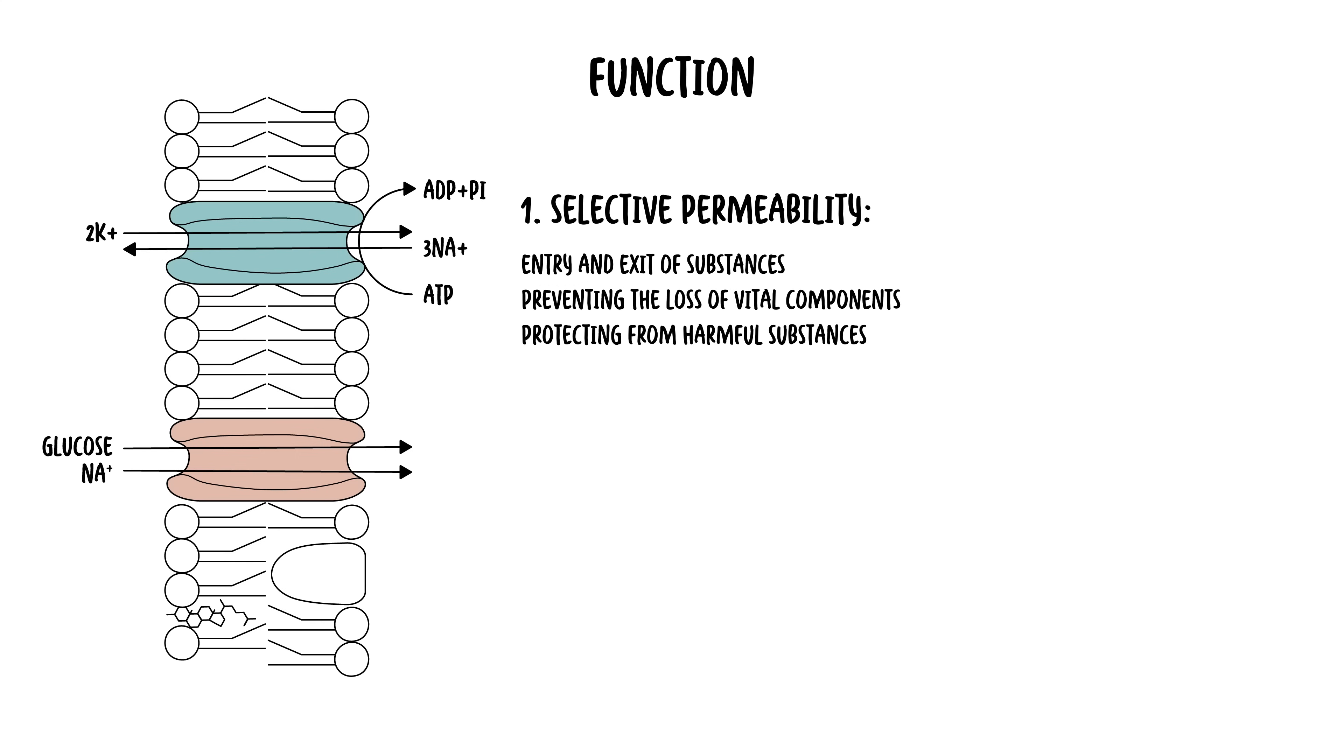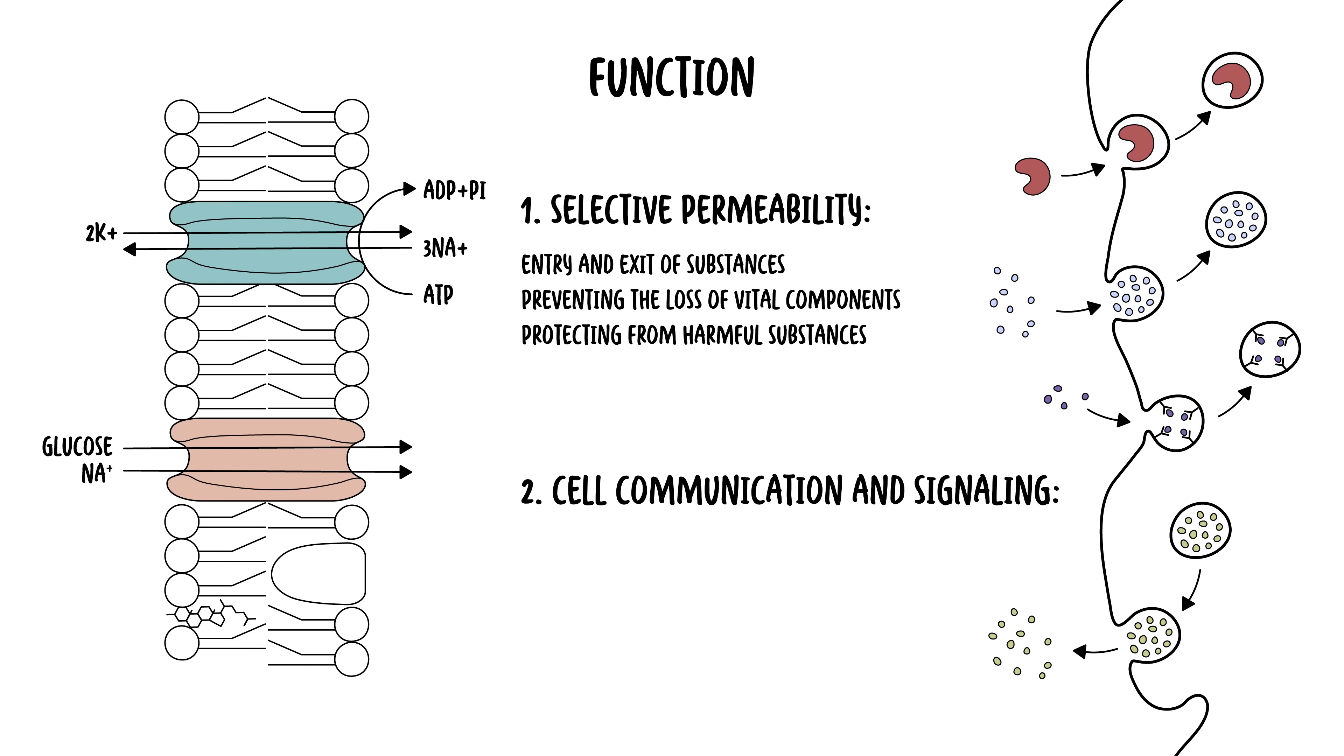The cell membrane also helps with cell communication and signaling. The membrane proteins act as receptors for signaling molecules such as hormones and neurotransmitters, enabling the cell to respond to external stimuli and communicate with other cells.